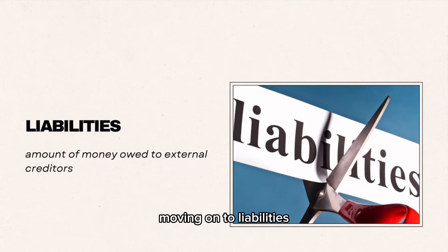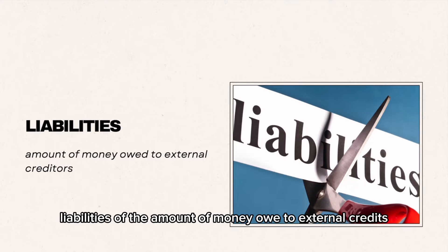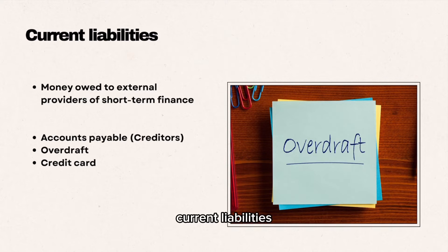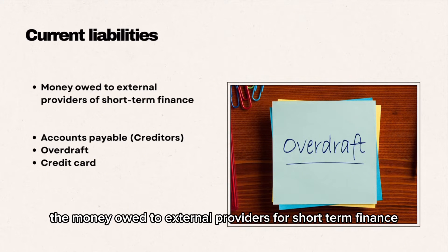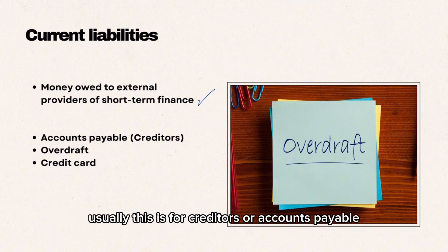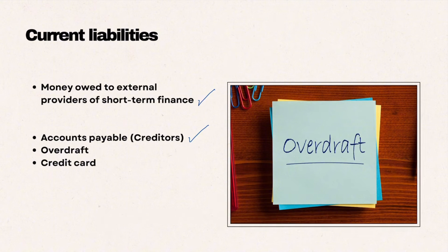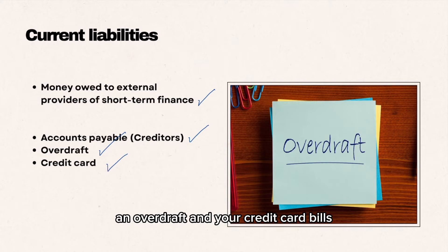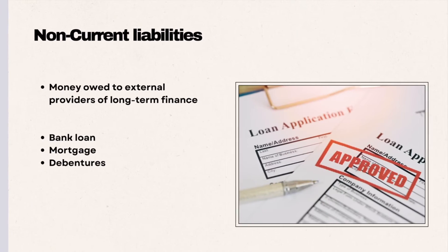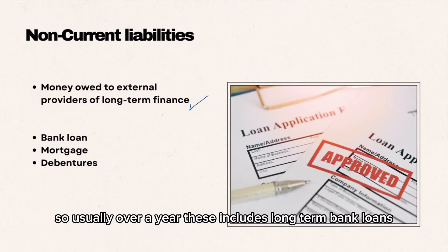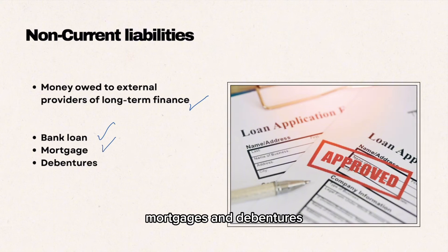Moving on to liabilities. Liabilities are the amount of money owed to external creditors — essentially the money that you owe people. Current liabilities is the money owed to external providers for short-term finance, usually creditors or accounts payable — the businesses and private individuals that you owe money to — as well as overdrafts and credit card bills. Non-current liabilities are money owed to external providers for long-term finance, usually over a year, and these include long-term bank loans and mortgages.